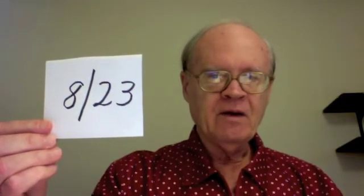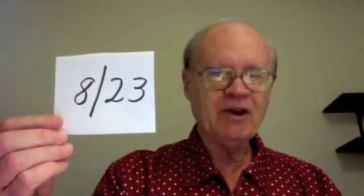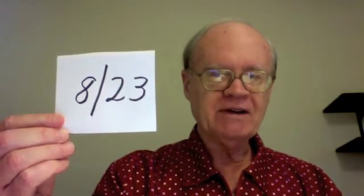Now consider this date name: 8-23. What date does it represent? Well, it represents August 23rd. And that is the only date that this date name could possibly represent. So this is an unambiguous date name.